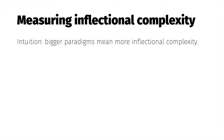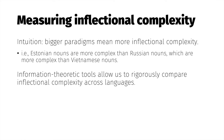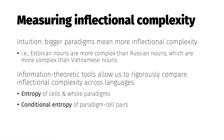You might intuit that a bigger paradigm entails a more complex inflectional system — Estonian blowing Vietnamese and Russian out of the water, say. But we can be more rigorous about this. Specifically, two information-theoretic tools, entropy and conditional entropy, let us quantify the complexity of inflectional systems and compare complexities across languages.